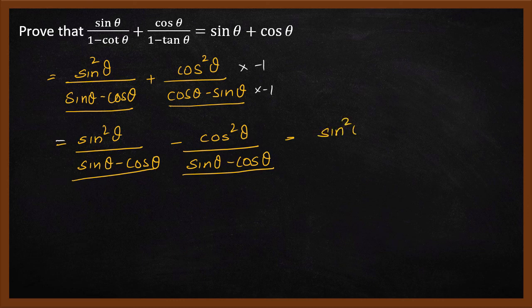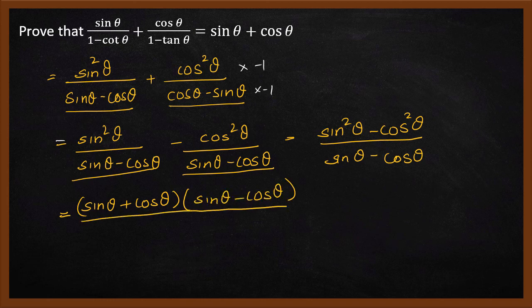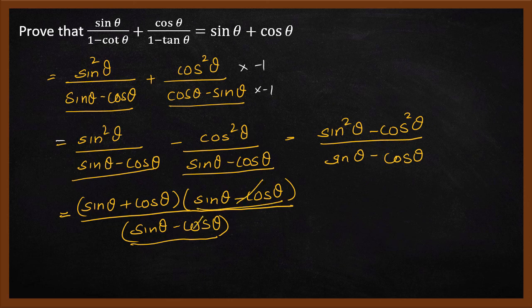So this becomes sine squared theta minus cos squared theta, all divided by sine theta minus cos theta. Now sine squared theta minus cos squared theta is like a squared minus b squared, which can be expanded as (a plus b)(a minus b). In this case that is (sine theta plus cos theta)(sine theta minus cos theta), divided by sine theta minus cos theta. The sine theta minus cos theta in the numerator and denominator cancel, and we are left with sine theta plus cos theta.